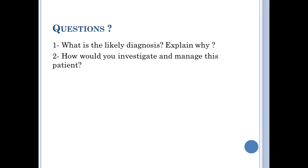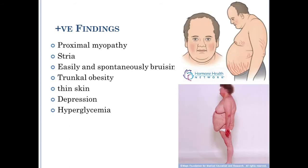So, what is the most likely diagnosis, and how would you approach this patient? Looking at the positive findings: we have proximal myopathy, striae, and the patient is easily and spontaneously bruised. These are all disturbances of protein metabolism. The striae are due to rupture of collagen fibers in the dermis with exposure of the vascular subcutaneous tissue, so they appear either red or purple.